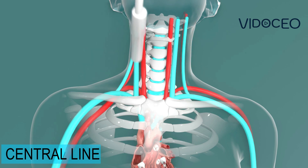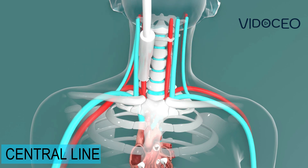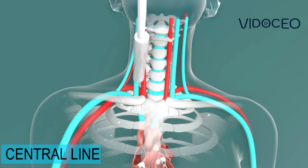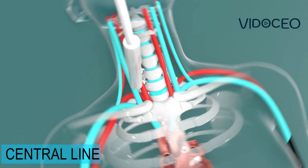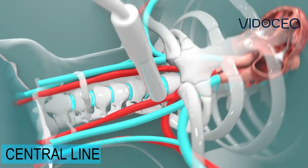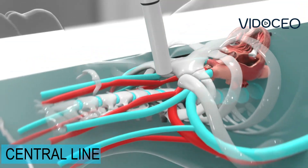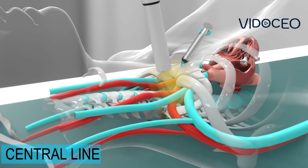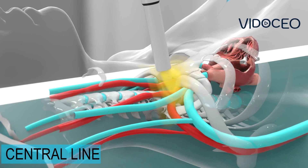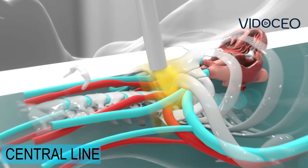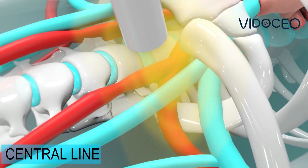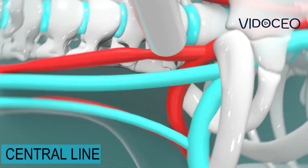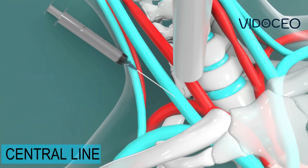An ultrasound is often used to image these blood vessels to guide the placement of the central venous catheter. The skin is numbed using local anesthesia. Then a needle is placed into the lumen of the vein using the ultrasound to guide it.